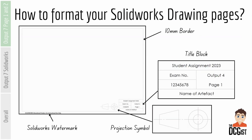This slide will look familiar to you as well, because this is the same idea as when you're formatting your SOLIDWORKS drawing pages in output 4. You're going to have your 10 millimeter border, you're going to have your title block — and this will be output 7 — and you'll have your SOLIDWORKS border mark down in the bottom corner, which is smaller now so it fits inside your 10 millimeter border. You'll have your projection symbol down in the bottom corner as well so the person looking at it knows what type of orthographic views you're using. And don't forget you have the option of making this a template, so if you've done it already for output 3, you can just use a template again and change what goes into the title block.